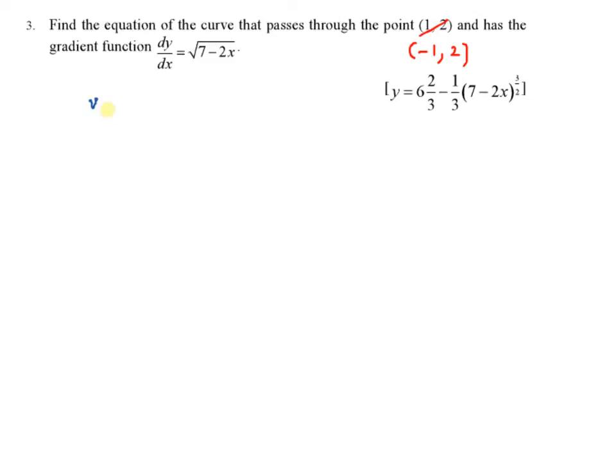Using the same concept to find the equation of the curve, you have to integrate your gradient function that is square root of 7 minus 2x. So how to find this? First, you know that square root is power half. So now you have to integrate the composite function.